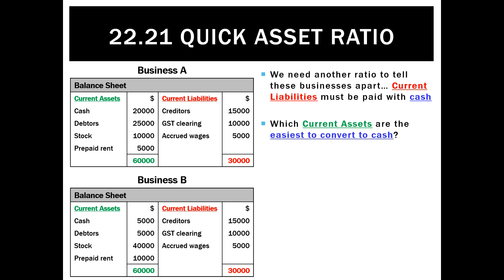So based on that, which business would you rather be? It all comes down to which are the easiest current assets to convert into cash. Obviously cash — well, it already is cash, so that's probably the best asset we can ever have to pay our bills. Debtors are a good asset to turn into cash because we have a legal right to get the money from someone, and depending on the industry, debtors usually pay quite quickly if they want to do business with us again.